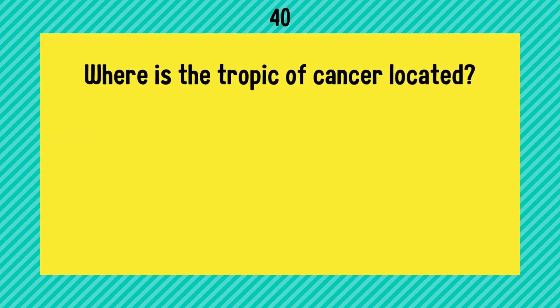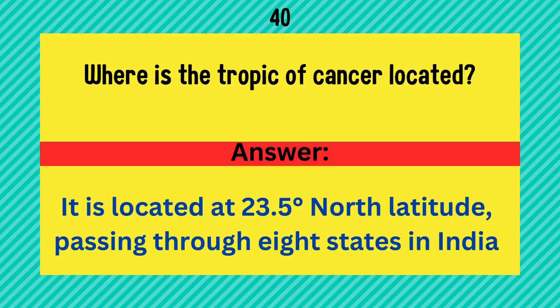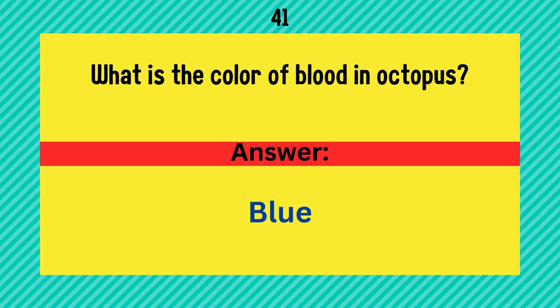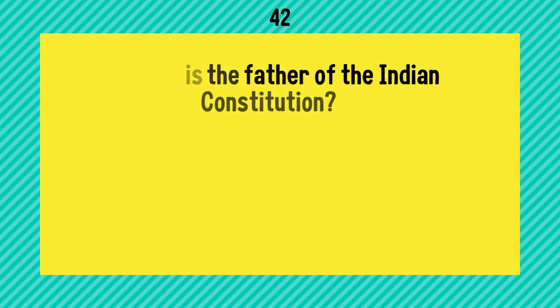Where is the Tropic of Cancer located? It's located at 23.5 degrees north latitude, passing through eight states in India. What is the color of blood in an octopus? Answer is blue.